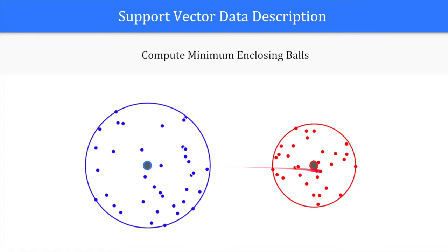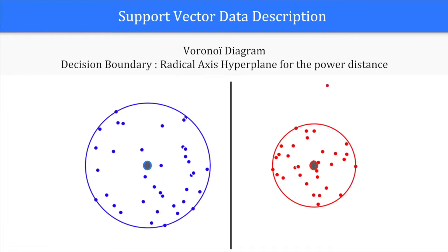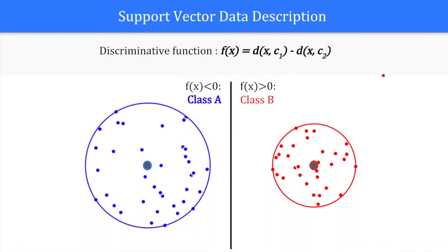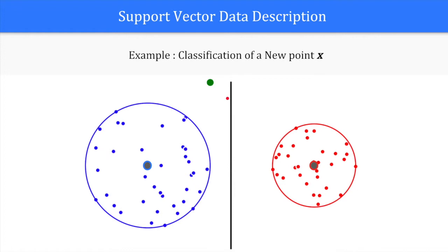For two classes, the decision boundary is the radical axis hyperplane for the power distance. New points are classified according to their closest centers. Here, we take a new point in green. We first calculate the distances to the two enclosing balls centers. The closest center is the blue center, so the new point is classified as belonging to class A.